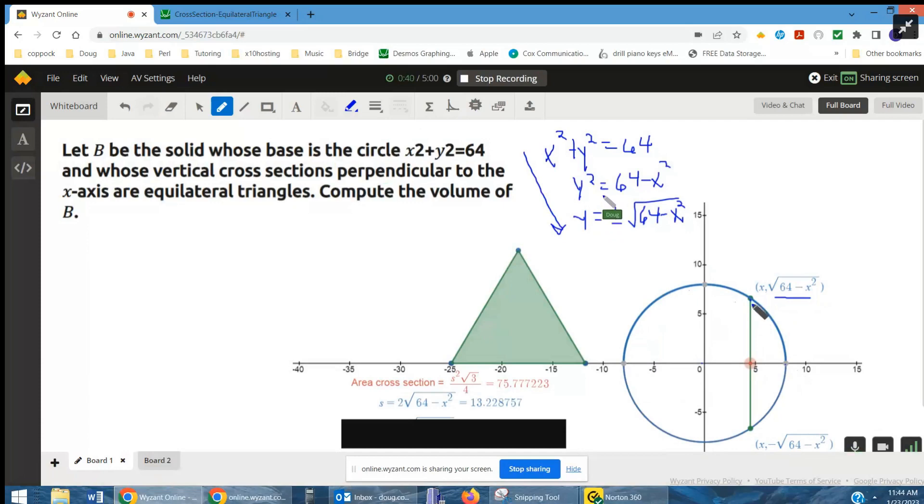this distance right here, which is the base of an equilateral triangle, is this y-coordinate minus this y-coordinate, which gives us two of those y-coordinates.